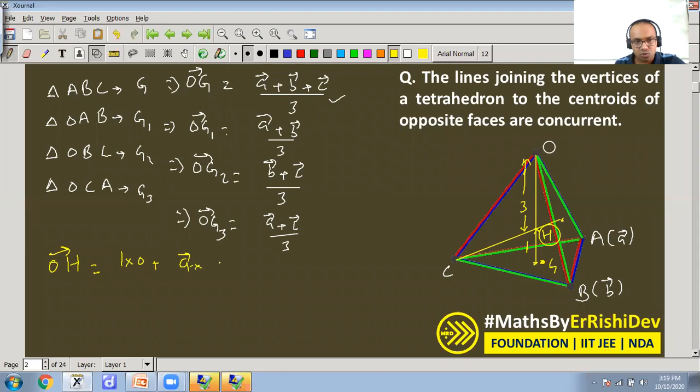What was G? So carefully look: 3 times (a plus b plus c upon 3) - that will be cancelled out and divided by what? 1 plus 3. It is always m plus n in section formula. Simple implementation of section formula. So this value is coming out to be a plus b plus c upon 4. This is the value of OH. That is, we have got the position vector of H in reference to the median OG.